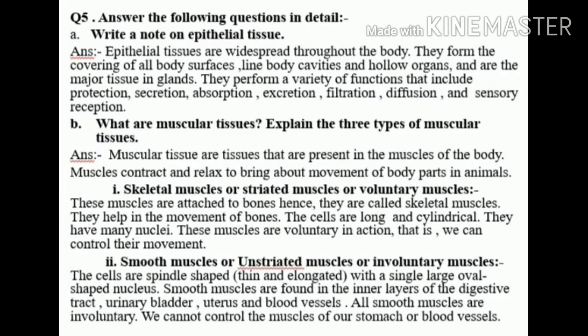Answer the following questions in detail. Number 8a: Write a note on epithelial tissue. Answer: Epithelial tissues are widespread throughout the body. They form the covering of all the body surfaces, line body cavities and hollow organs, and are the major tissues in glands. They perform a variety of functions that include protection, secretion, absorption, excretion, filtration, diffusion, and sensory reception.